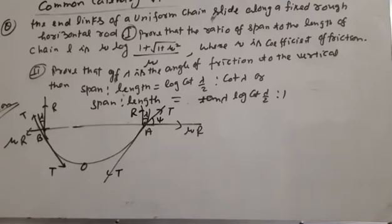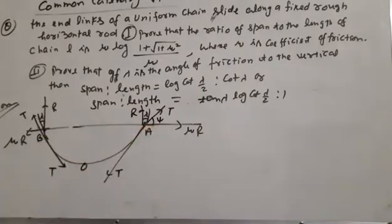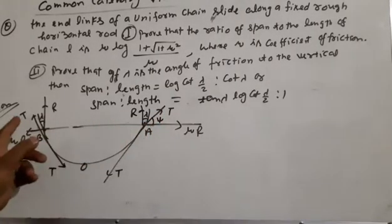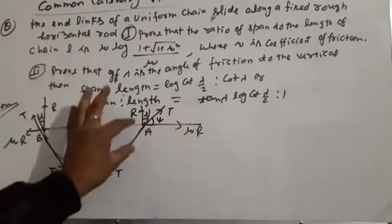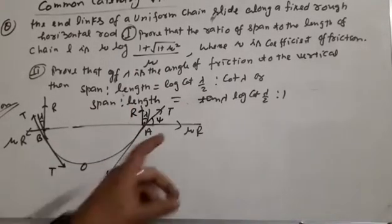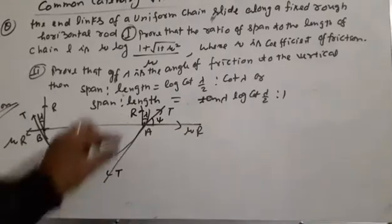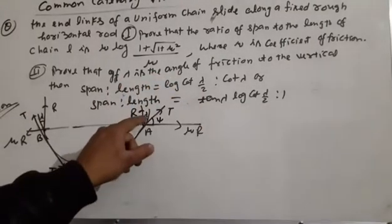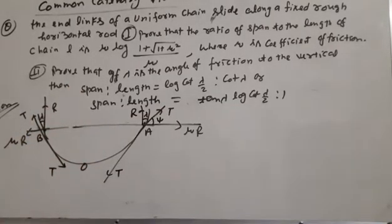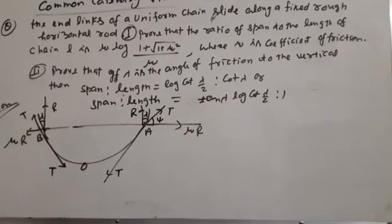A uniform chain slides along a rough horizontal rod. Here the rod is fixed, and the chain slides. We have tensions T at each end. The friction is rough with friction coefficient mu applied as a friction force. Lambda in the second part is the angle of friction. The tension and fixed point is the root of the catenary, and the figure shows the forces. The solution proceeds with the force diagram.